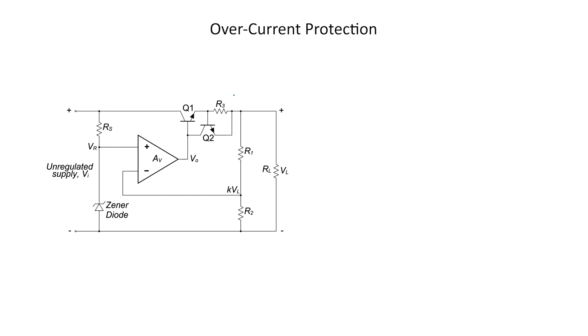What we're going to do in the rest of this video is show how we can limit the current in the event of a fault. I'm going to introduce a slight variation of the circuit that we just looked at. In this voltage regulator, we have overcurrent protection. It's identical to the circuit we just looked at except for two circuit elements — I've added one resistor and another transistor to the circuit. They're in series between Q1 and the sampling network.